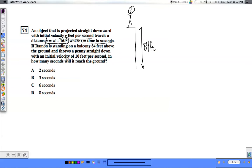He throws a penny straight down with an initial velocity of 10 feet per second. So what the problem is looking for is how many seconds will it take for it to reach the ground. Let's look at the information we have. First is the equation s equals vt plus 16t squared.